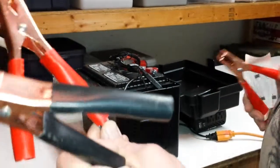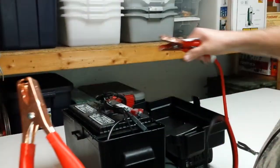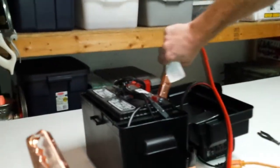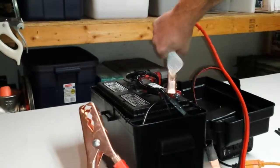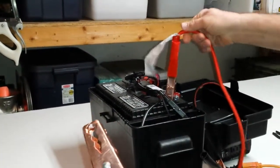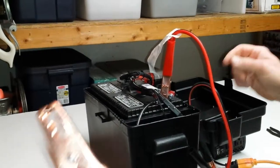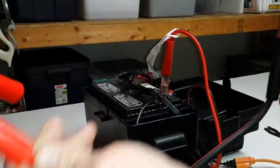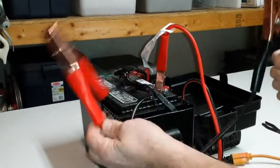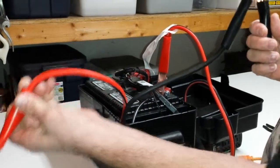The way that you hook this up to your automobile to recharge it is you would start by hooking up the positive terminal, or red terminal, of your jumper cables first. The other end you would attach to the positive terminal on your automobile.